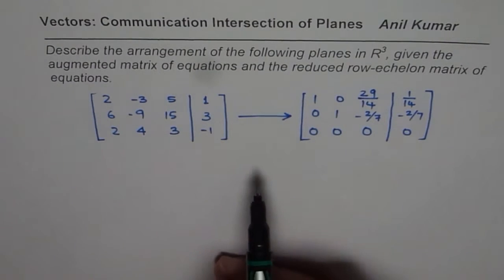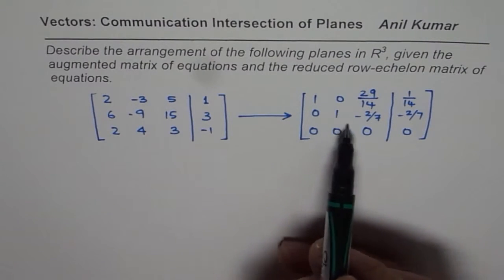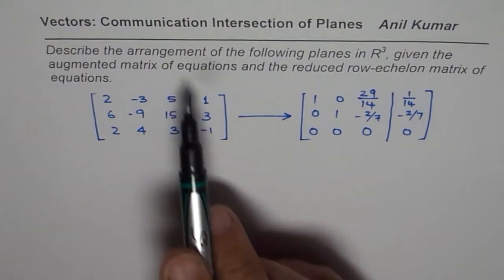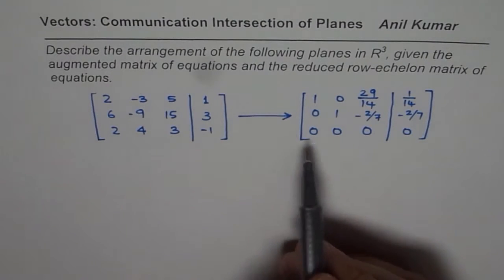Here is the question. We are given this augmented matrix and the reduced form. We need to describe the arrangement. We don't really have to find the solution. Now what do you conclude from here?